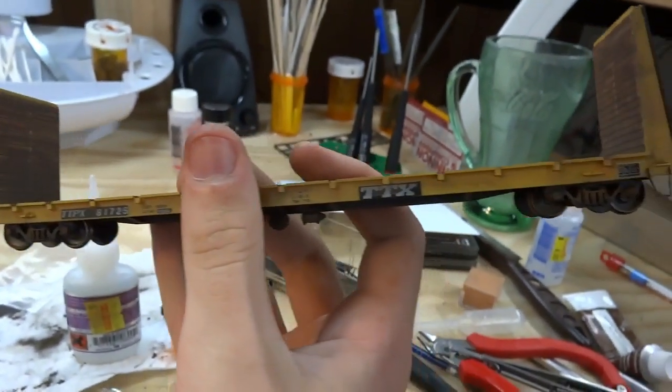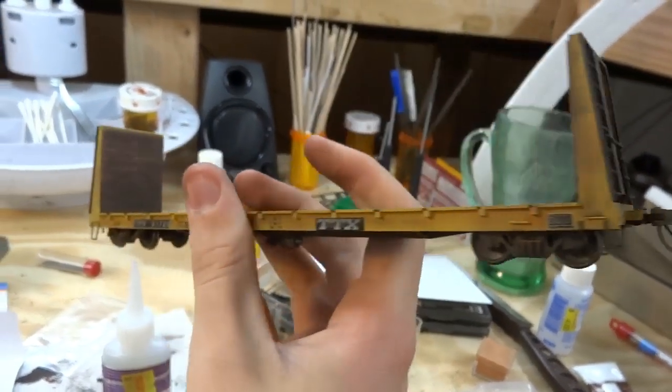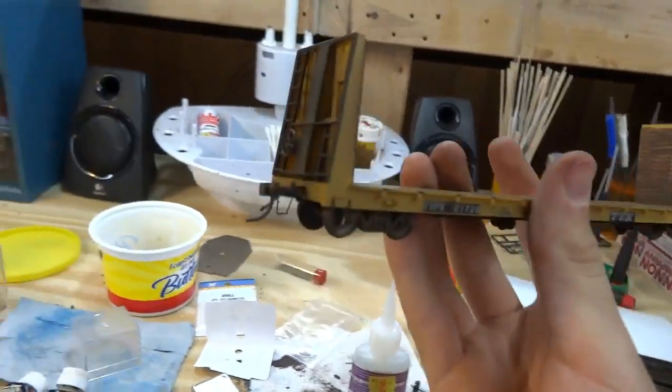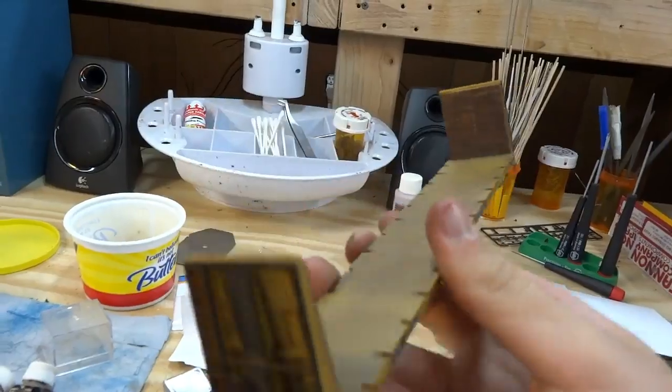But otherwise, I'm going to hit this up with a flat clear coat and I'm going to see how it comes out. It looks really good to me so far for being a Branchline, that's a Branchline kit again, for being a Roundhouse kit. So let's go.